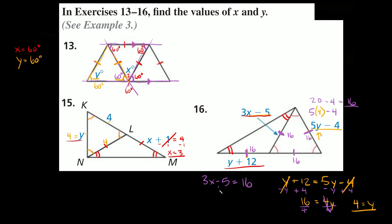So 3x minus 5 equals 16. Add 5 to both sides — those cancel out — leaving 3x equals 21. Divide both sides by 3 and x equals 21 divided by 3, which is 7. So x is equal to 7.